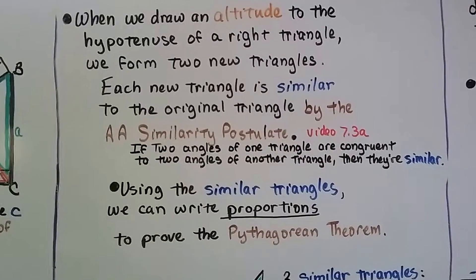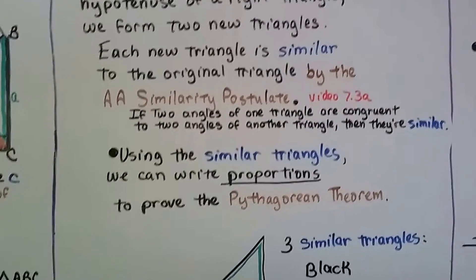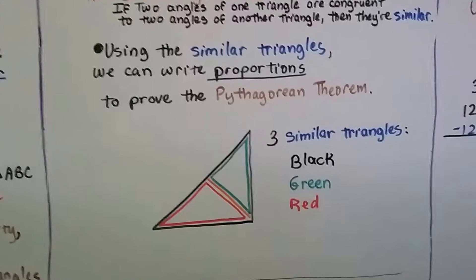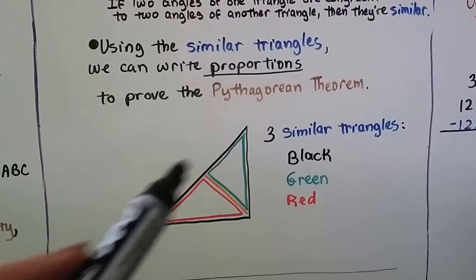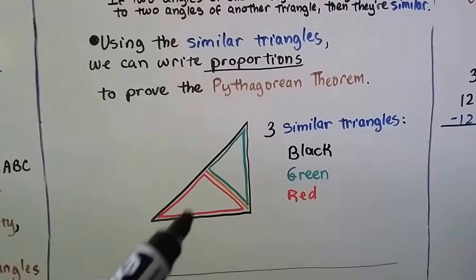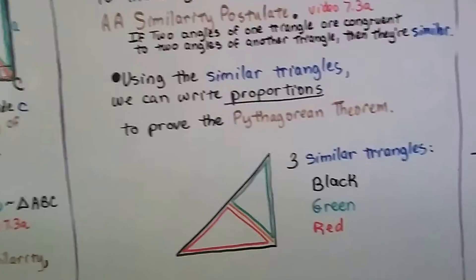And using the similar triangles, we can write proportions to prove the Pythagorean Theorem. So we have three similar triangles, the big black one, the green one, and the red one, because we made that orange altitude.